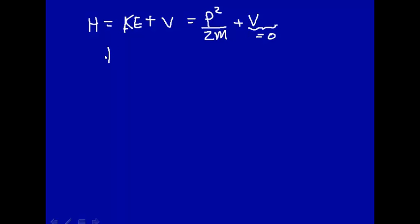Now to go from the classical description to the quantum mechanical description, we replace these quantities by operators. So the Hamiltonian operator is the kinetic energy operator plus the potential energy operator.